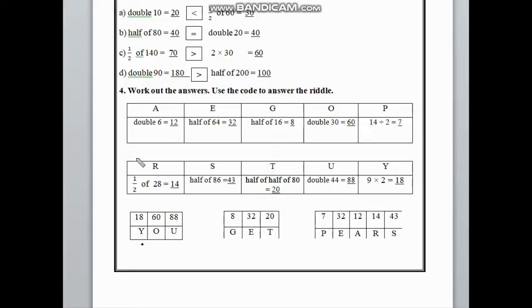In this blank box, we can see double 6. Double 6 is 12, and the code of 12 is A. Here is half of 64. If we divide 64 by 2, we get 32.